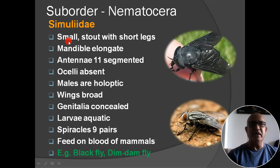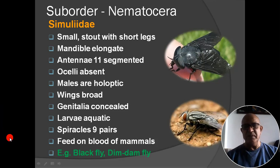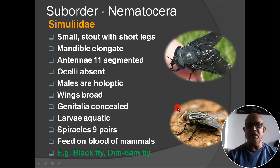Next family: Simuliidae. Main characters: body small and stout with short legs; mandibles elongate; antenna 11 segmented; ocelli absent; males are holoptic type; wings are broad and generally concealed when at rest; larvae aquatic; spherical no-jody type; feed on blood of mammals. Main examples: black fly and dum-dum fly. This figure shows the black fly and this is the dum-dum fly.